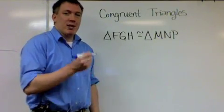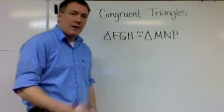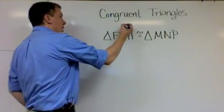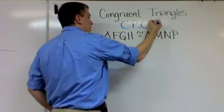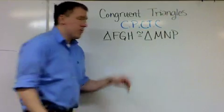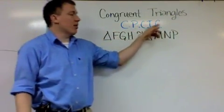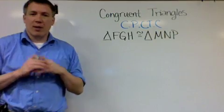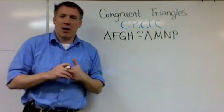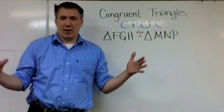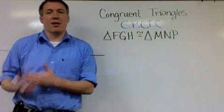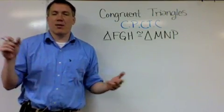We're going to use this so much this year that we're going to give an abbreviation, an acronym if you will: CPCTC. Corresponding parts of congruent triangles are congruent. Whenever we use this in a proof, you don't need to write out a huge long statement. You can write CPCTC—that is what it means in geometry.